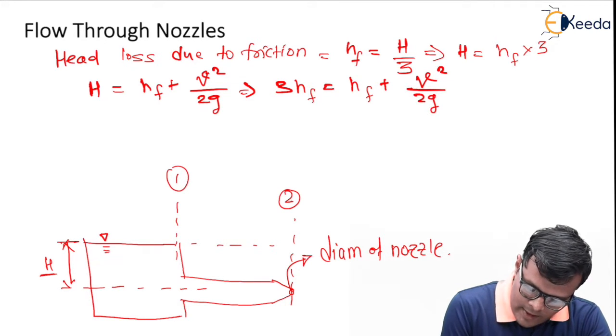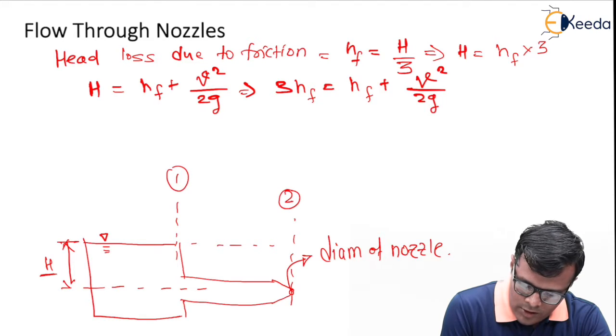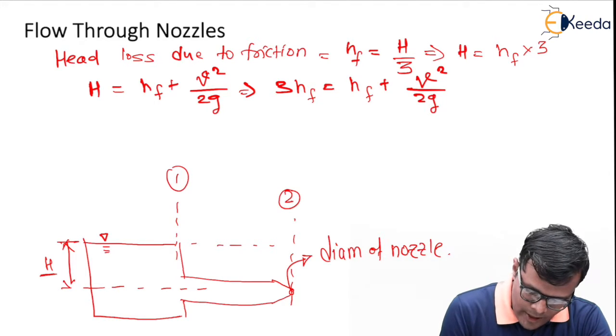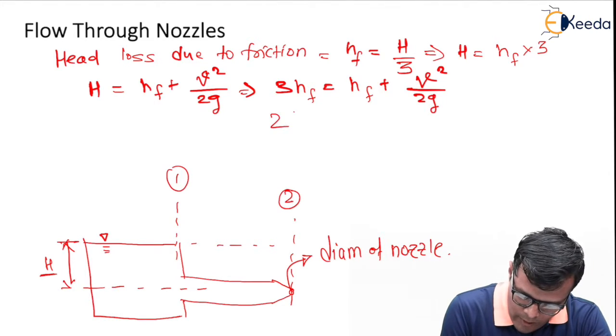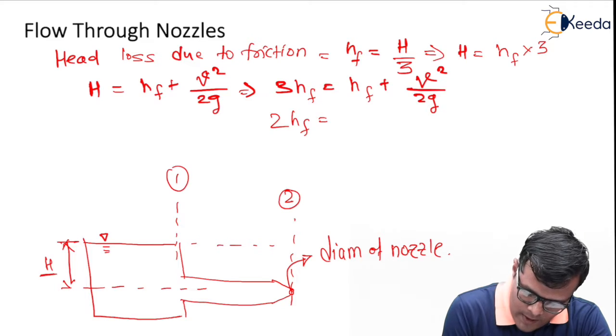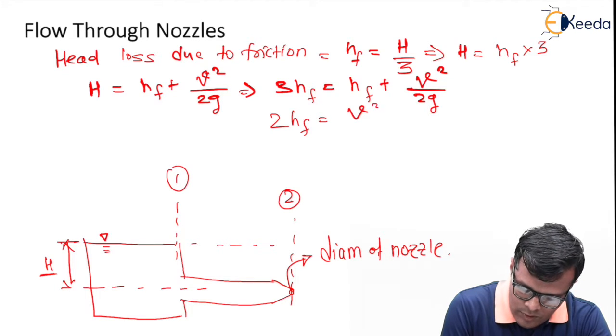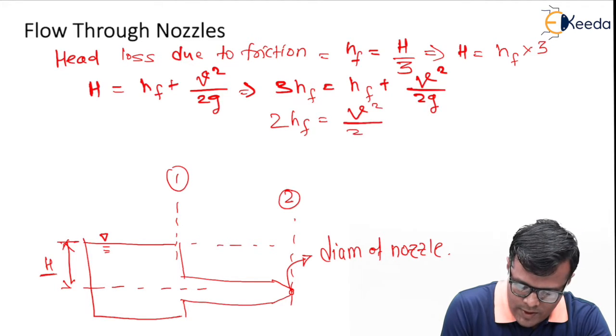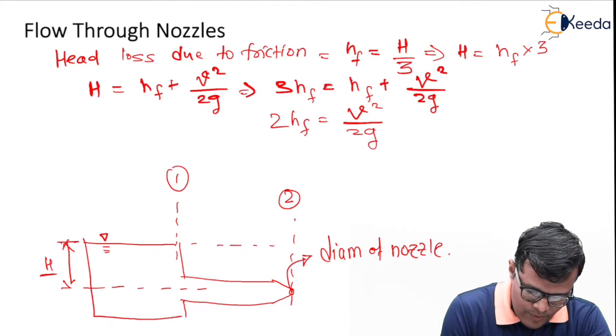This Hf comes to the other side and becomes negative, so it becomes 2Hf equals v² upon 2g.